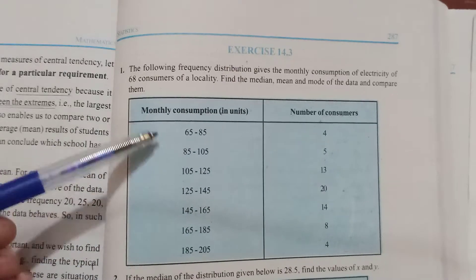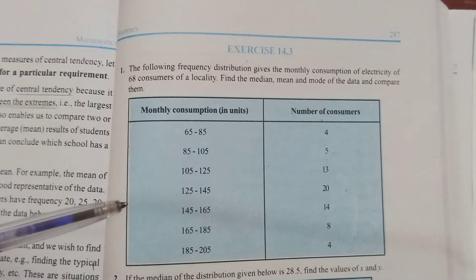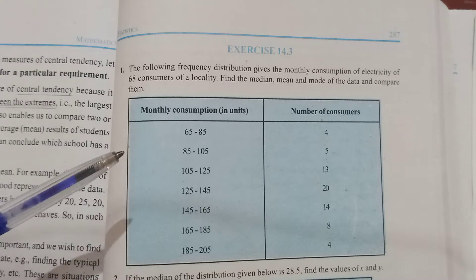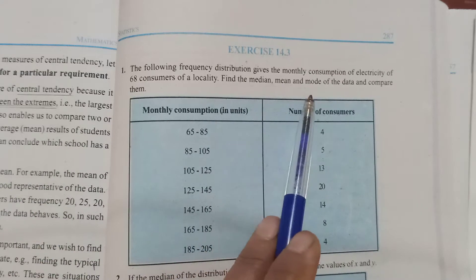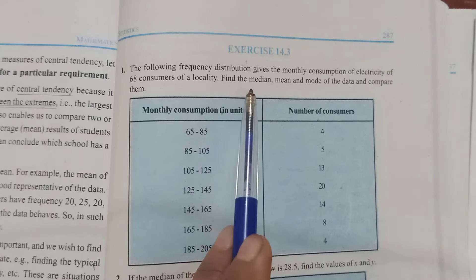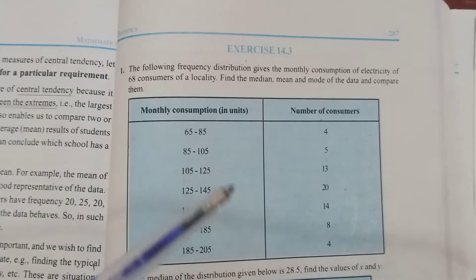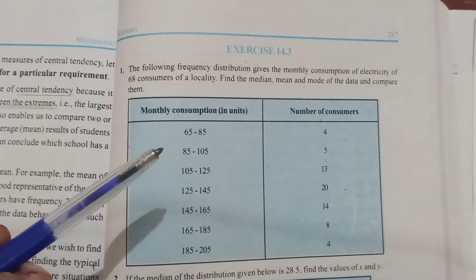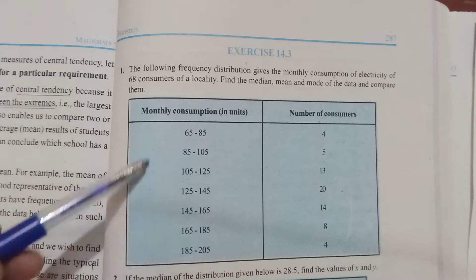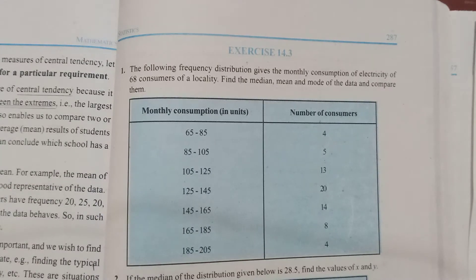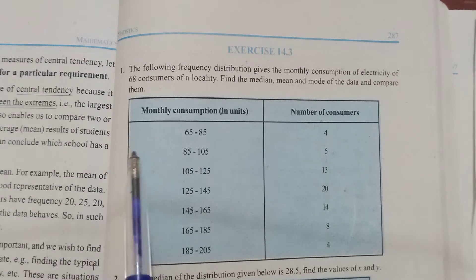Exercise 14.3 is based on the third measure of central tendency, that is the median. Out of median, mean, and mode, these are the three measures of central tendency. Median gives you the mid value of the data. For grouped data, you must have already seen the formula. Let's take up the first question.